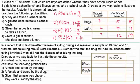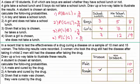In a recent trial to test the effectiveness of a drug curing a disease, on a sample of 10 men and 15 women, the following results were recorded. We put 10 for men and 15 for women. Three women who took the drug still had the disease after taking it, so we put three there; three from 15 gives us 12 women cured. Then two men still had the disease after taking the drug, so we put two there, and two from 10 leaves eight men cured.